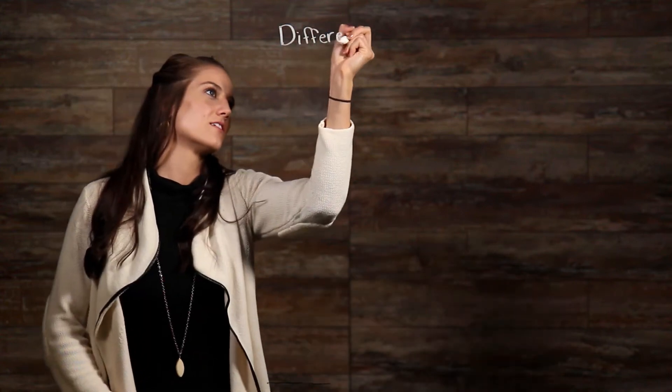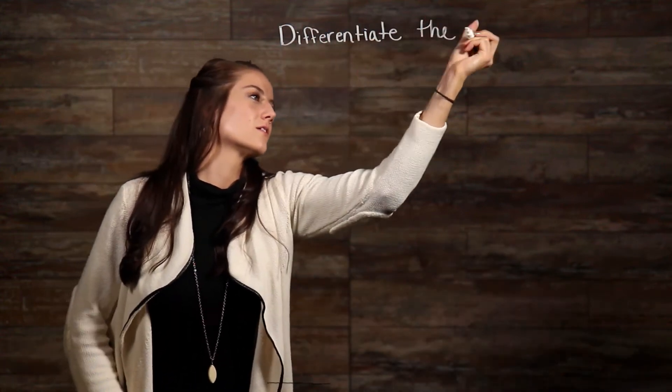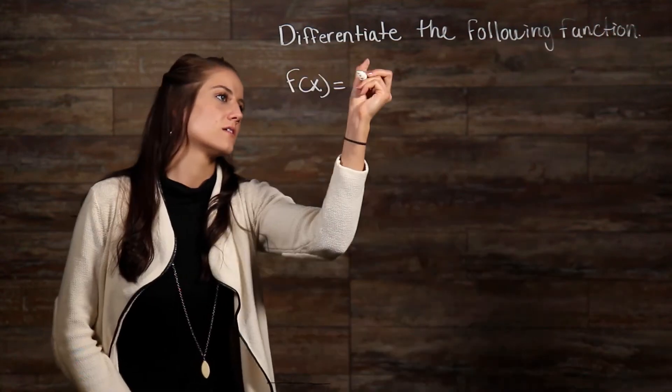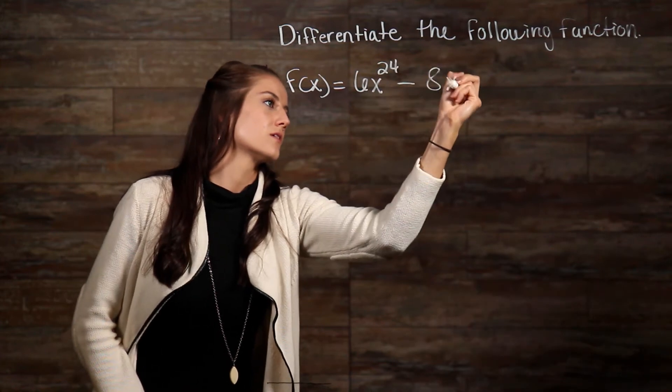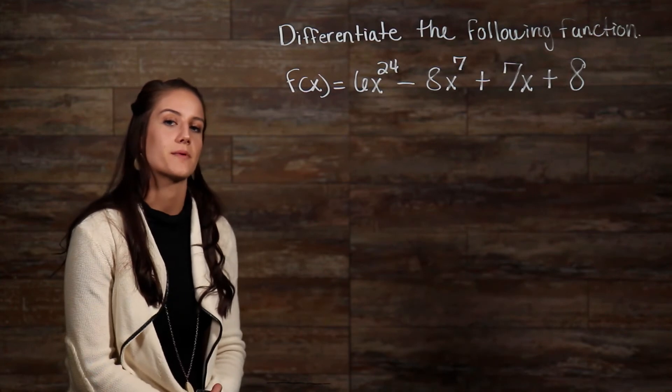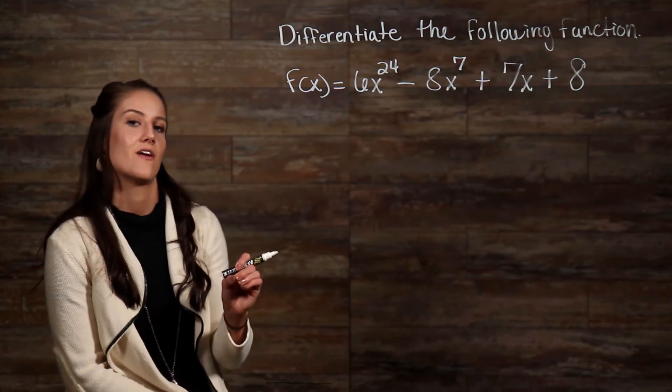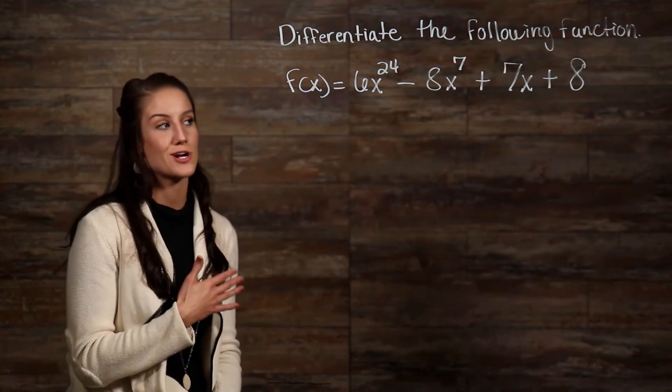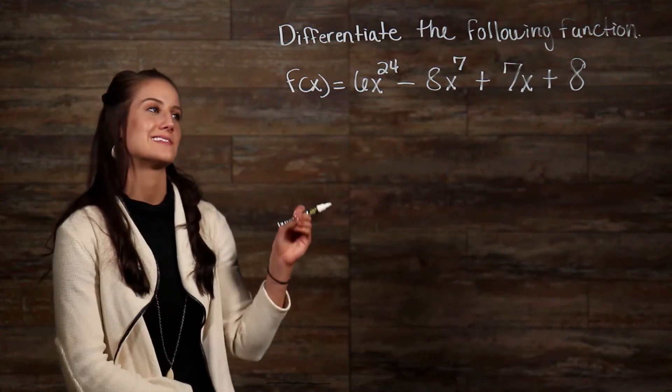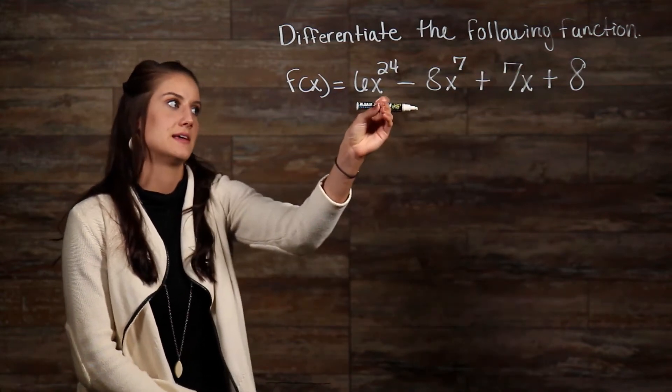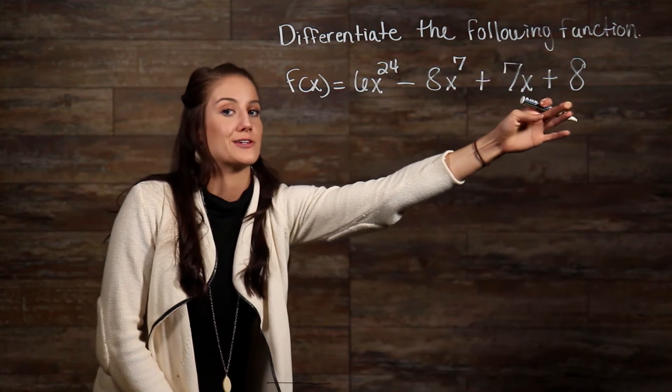Alright, now let's take a look at a few examples. So, according to our first property, we are able to take the derivative of each term individually because each term is being added or subtracted. By looking at our function, we can see that we need to use the power rule on the three terms where we have an exponent with a variable on the base. And with our eight here, that will just be zero because it's a constant.